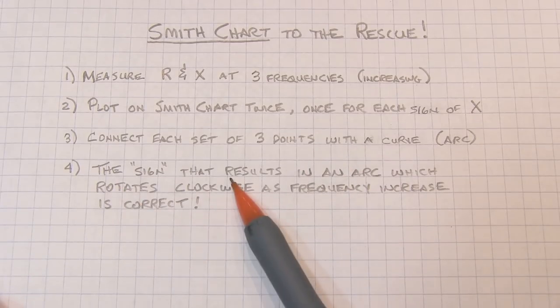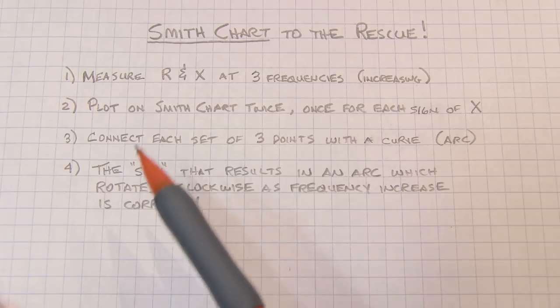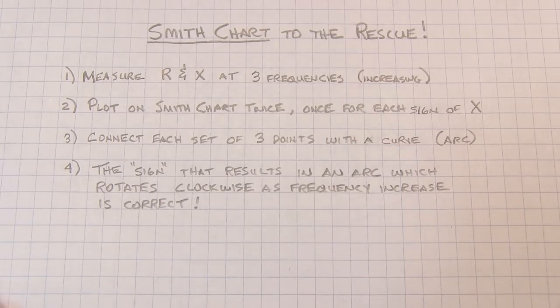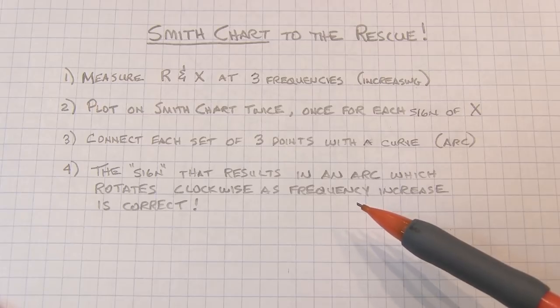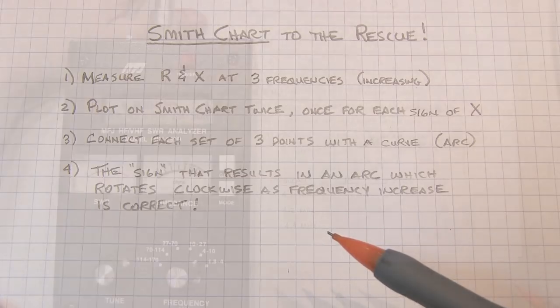Now the sign that results in an arc that rotates clockwise as the frequency increases is the correct one. This is simply a very convenient property of the math behind the Smith chart. So let's go run an example and show you how it works.